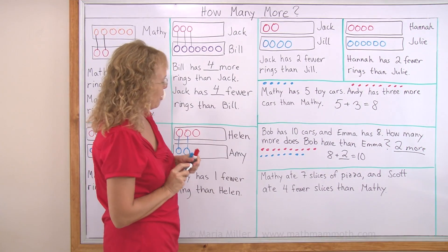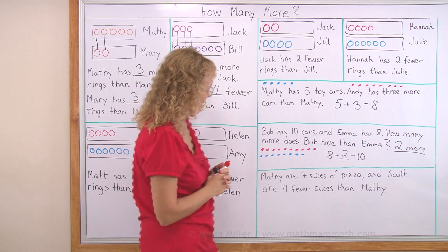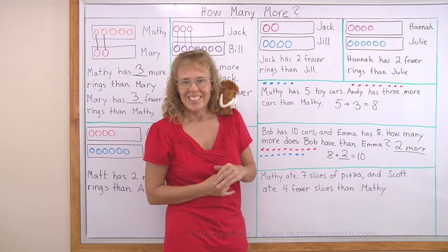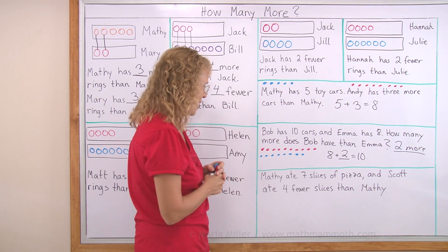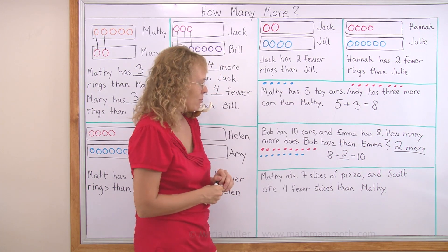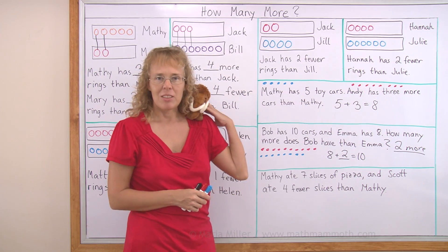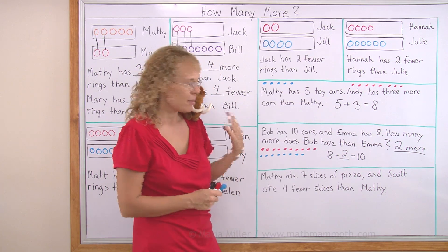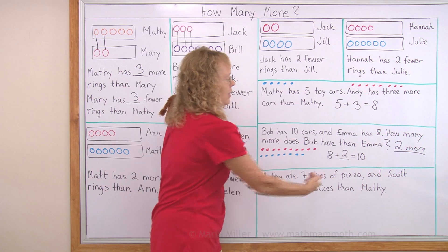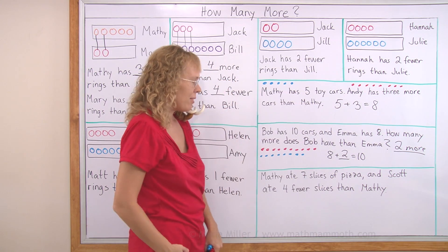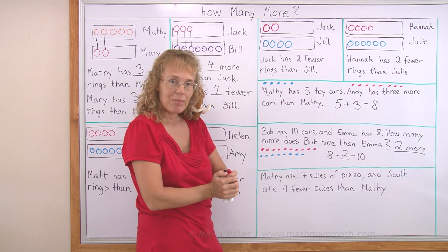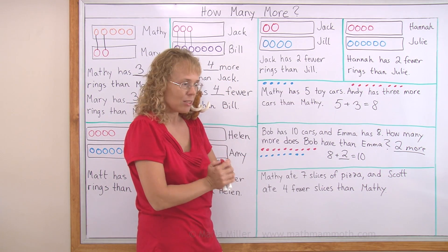Then again a word problem with Matthew. Matthew ate seven slices of pizza — he has a mammoth appetite. And Scott ate four fewer slices than Matthew. How many slices did Scott eat? That's our question.